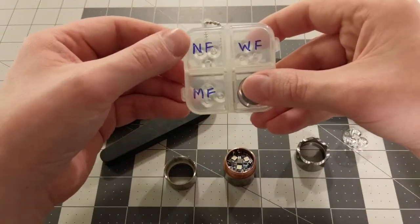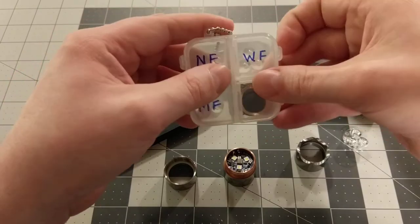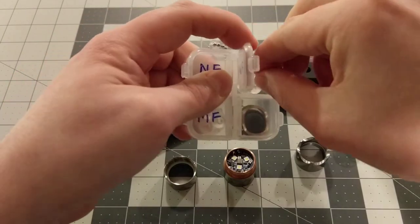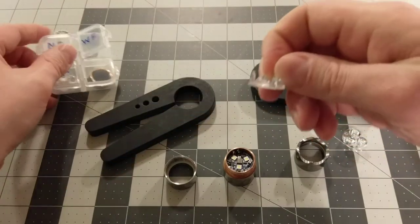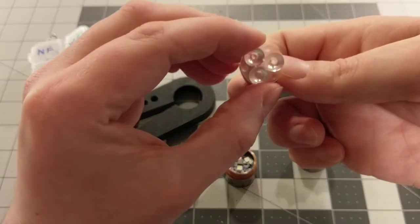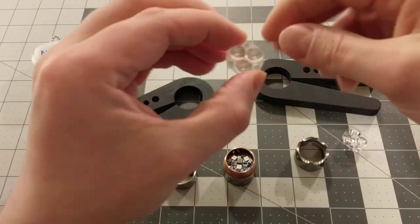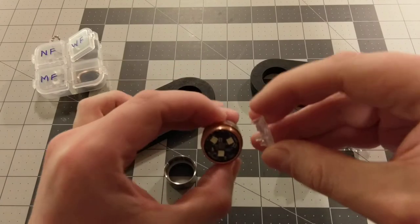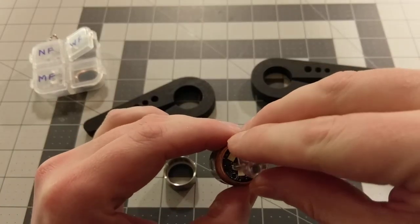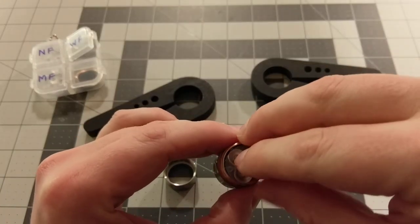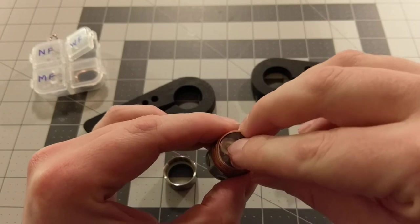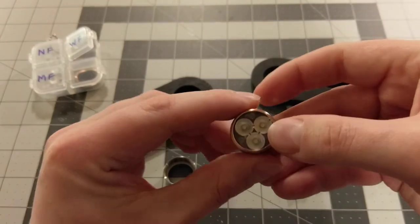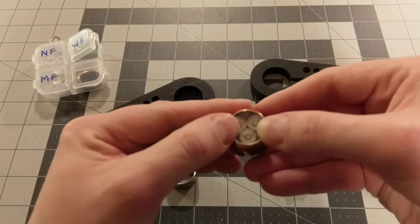So I have the kit with the narrow flood, medium flood, wide flood. So I go ahead and try out the wide flood. You can see frosted optic. Be gentle when you're seating it. That's now in place.